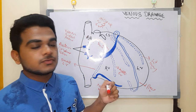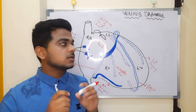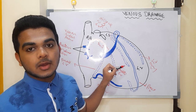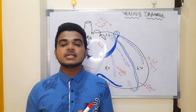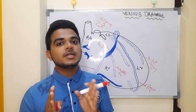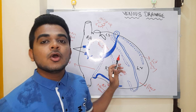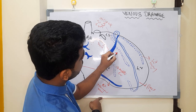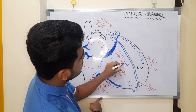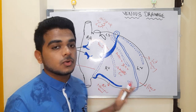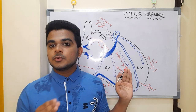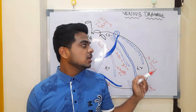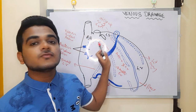The last vein is the posterior vein of the left ventricle. This vein goes posteriorly and downward — downward toward the ventricular structure, so due to the ventricular structure it is called the posterior vein of the left ventricle. It is present on the posterior wall of the left ventricle. Both the oblique vein and the posterior vein open into the middle portion of the coronary sinus.